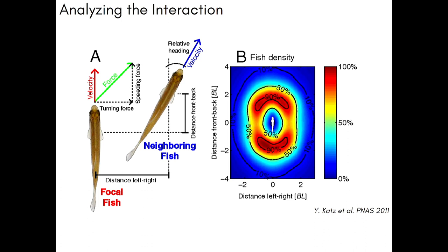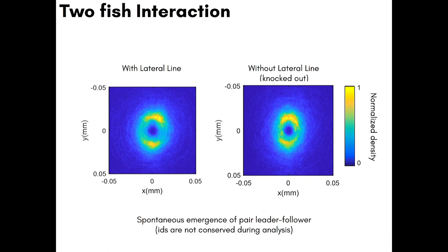All the analysis I'm going to do is based on this simple approach: I look at my focal fish, and in the reference frame of the focal fish, I look at the position of the other fish. If I do that multiple times, I can create a density map that tells me where I can find the other fish. For my two fish, in the control case with two normal fish, I get a map where the other fish is always in front or in the back — meaning I create a pair of leader-followers. We also knocked out the lateral line — the structure on the side of fish that allows them to sense hydrodynamic flow, which is thought to be central to collective behavior. Even when the lateral line is knocked out, the two fish still show a similar interaction pattern.